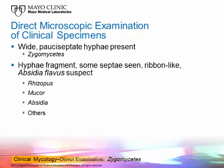We're going to talk about wide pauci-septate hyphae present in a clinical specimen. If you saw that, you would think about the group of fungi called the zygomycetes, now called mucorales. The infection used to be called zygomycosis, prior to that mucormycosis, and now they would like to call it mucormycosis again. As long as you understand what we're talking about, the name doesn't make much difference.